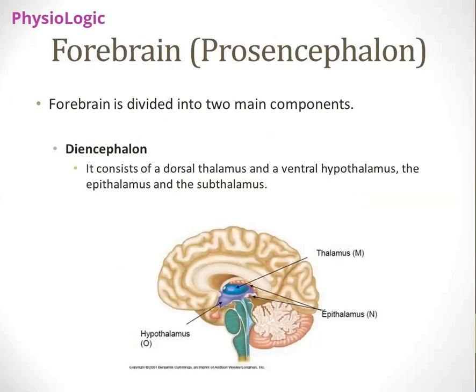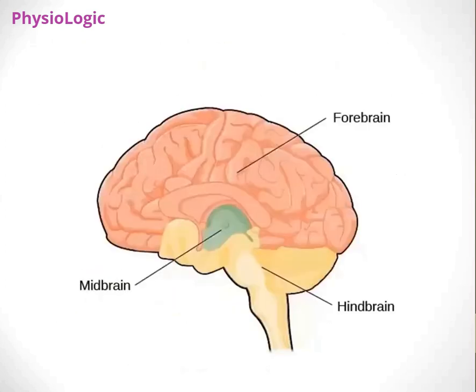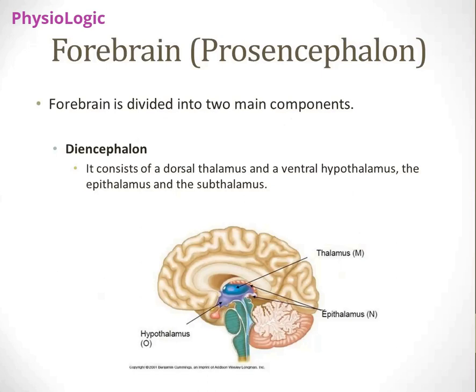The diencephalon refers to the innermost structures of the forebrain, while the outermost structures are known as the telencephalon. The diencephalon consists of four main structures: dorsal thalamus, hypothalamus, epithalamus, and subthalamus. If asked what structures are included in the diencephalon, these four are the answers.